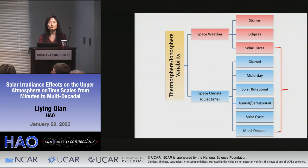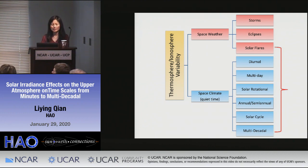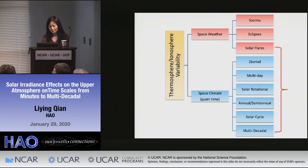Driven by external forcing and internal processes, there is a lot of complicated variability in the thermosphere and ionosphere system — space weather and space climate phenomena. The variation in the thermosphere and ionosphere ranges from minutes to hours driven by solar flares, going to longer timescales all the way to multi-decadal timescales driven by solar irradiance.